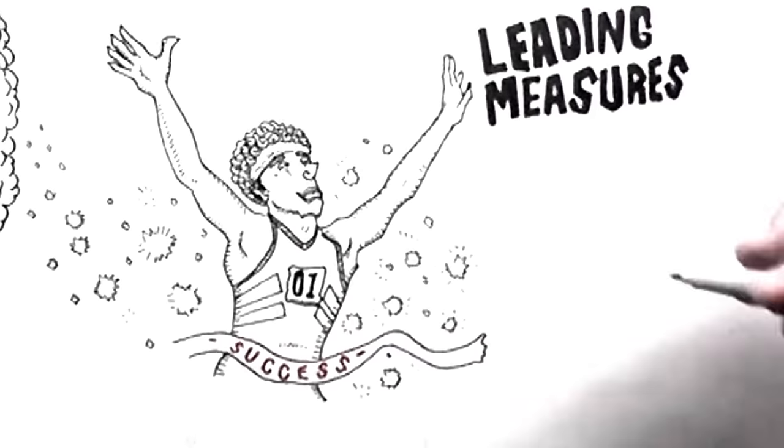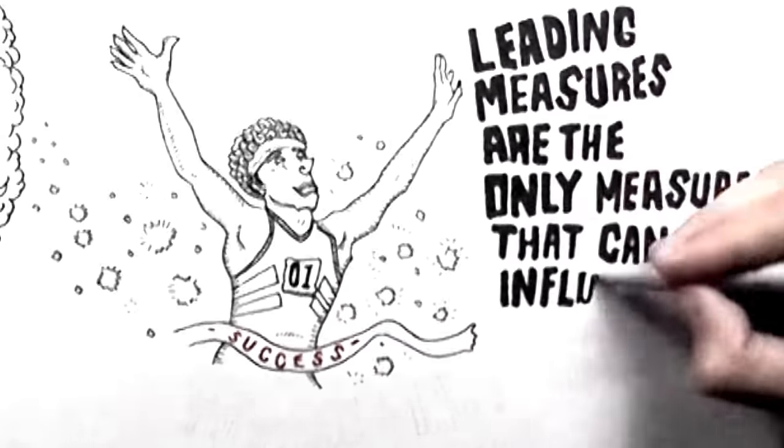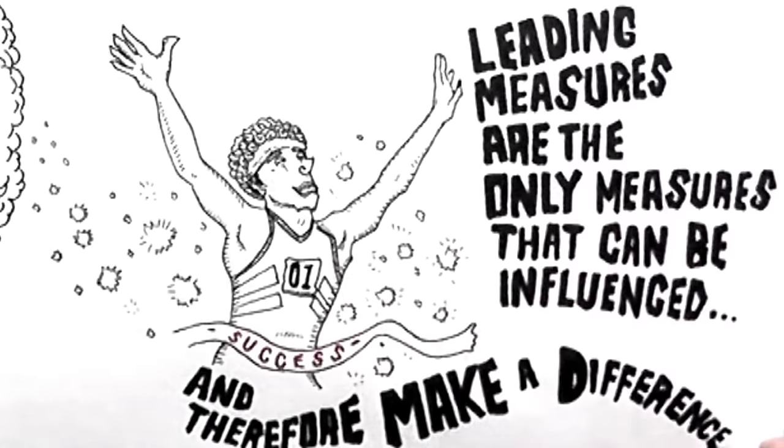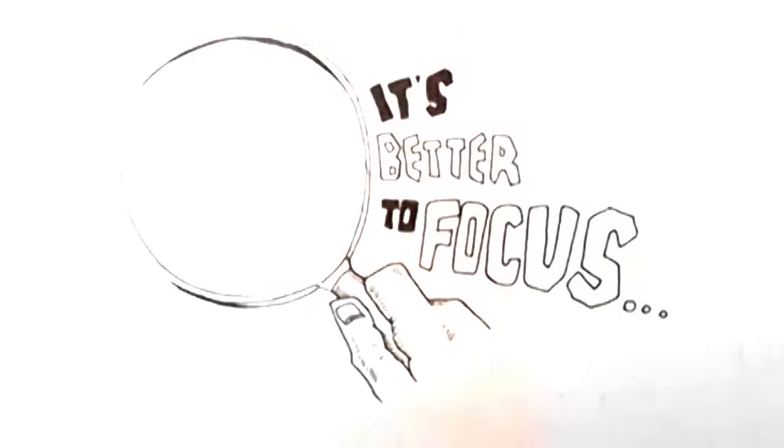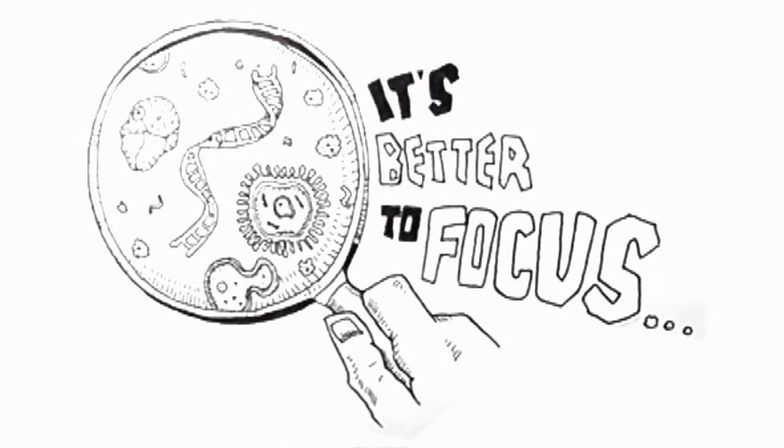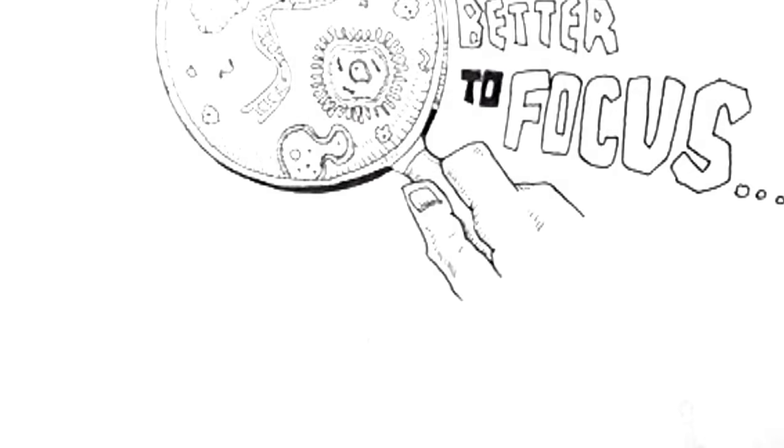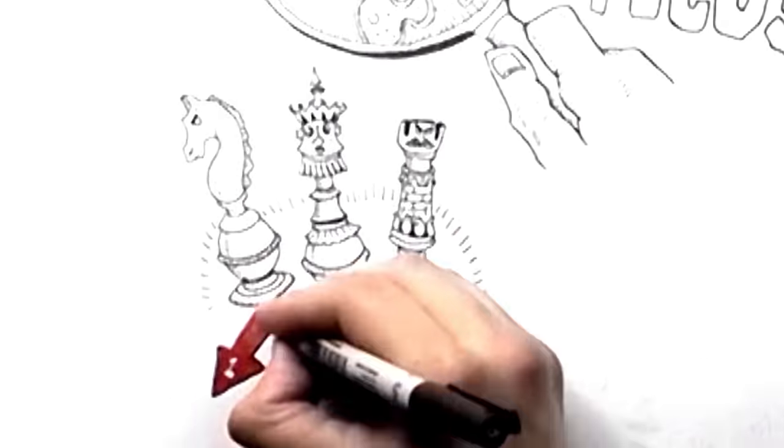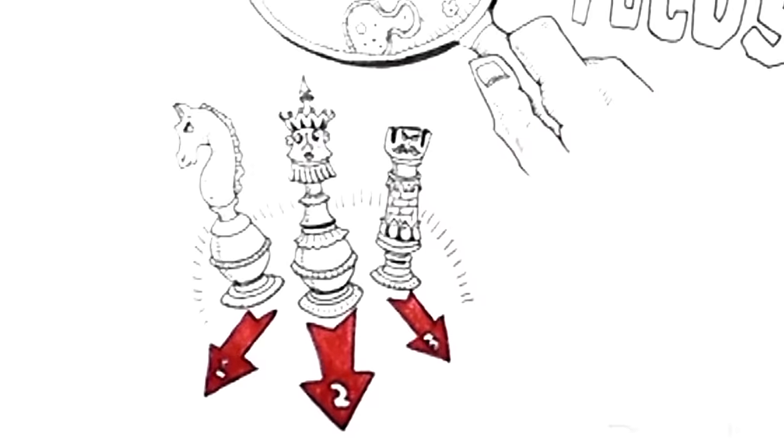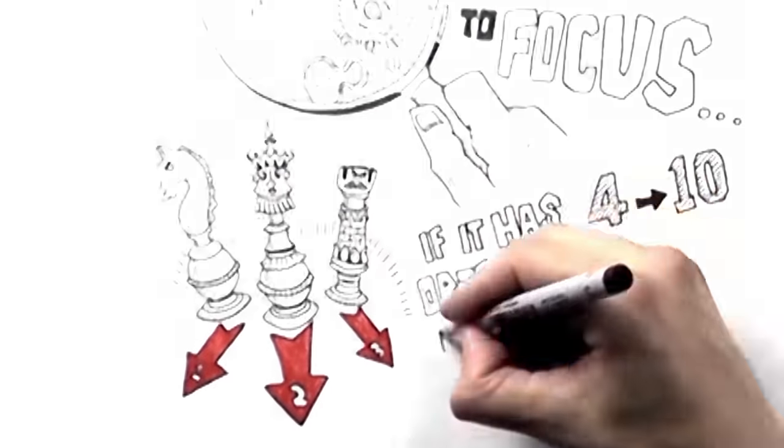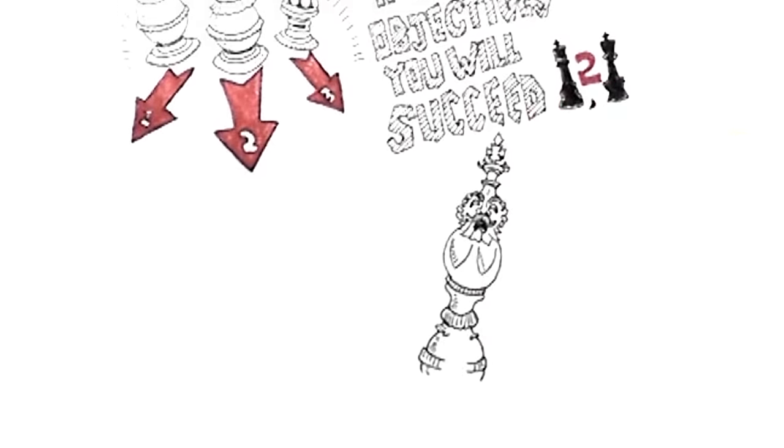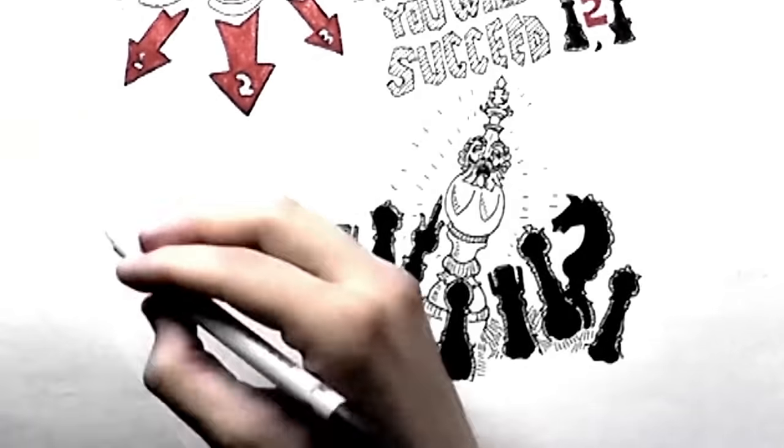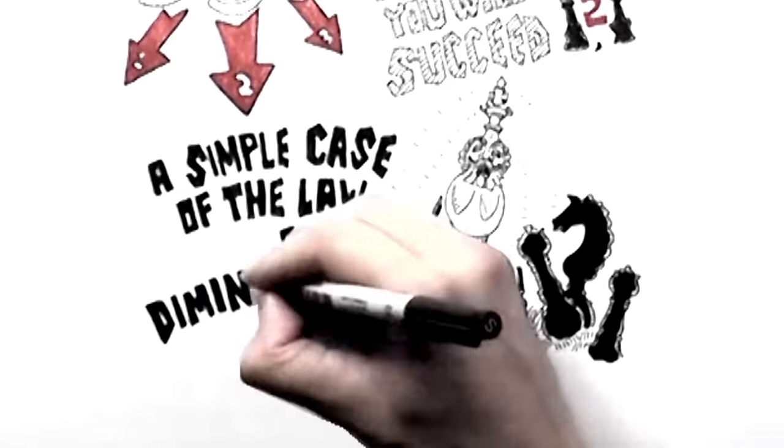Leading measures are harder to identify but they are the only measures that can be influenced and therefore make a difference. It is better to focus on a small number of things that will influence change rather than so many that nothing gets achieved at all. It has been said, if your strategy has three objectives, you will succeed in all three. If it has four to ten objectives, you will succeed in one to two. If it contains more than ten objectives, you will succeed in none. A simple case of the law of diminishing returns.